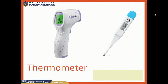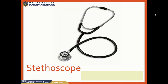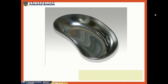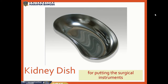This is a thermometer. Thermometer is for measuring body temperature. This is a stethoscope. Stethoscope is for listening to the heartbeat or the air in the lungs.